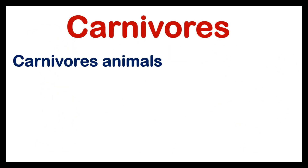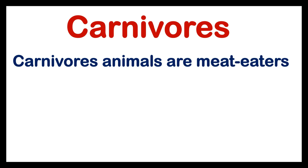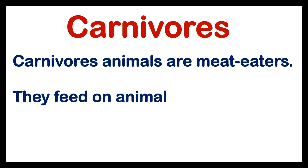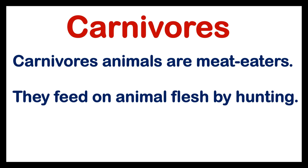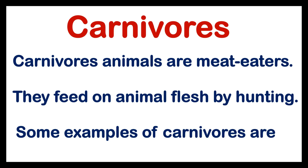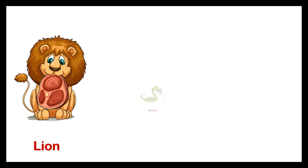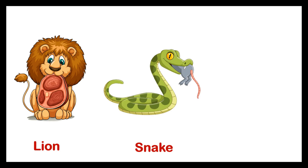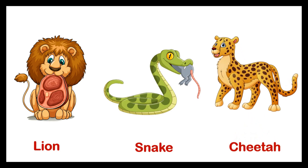Carnivorous. Carnivorous animals are meat eaters. They feed on animal flesh by hunting. Some examples of Carnivorous are Lion, Snake, Cheetah.